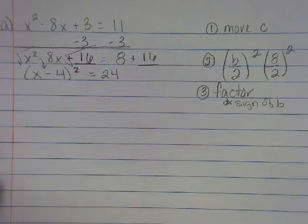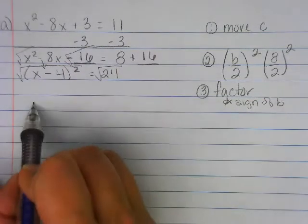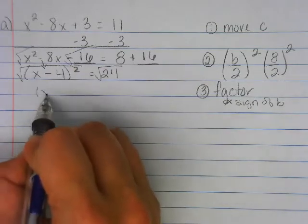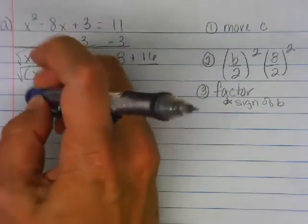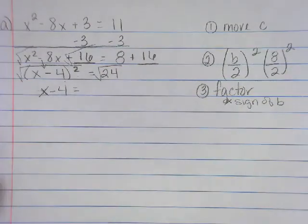Now this looks like what we did with the square root method. So I can take the square root to get rid of my squared. I have X. Actually, I don't need a parentheses. When I take the square root of my parentheses, X minus four equals, be careful here. If I take the square root of 24, it can be what kind of numbers?